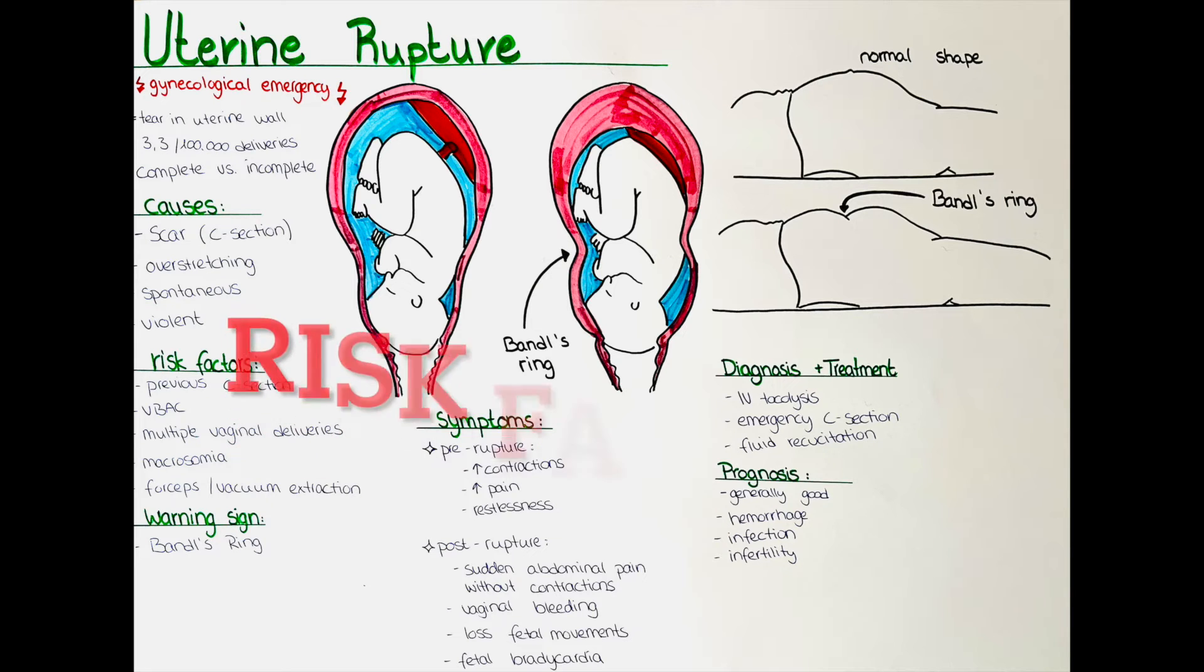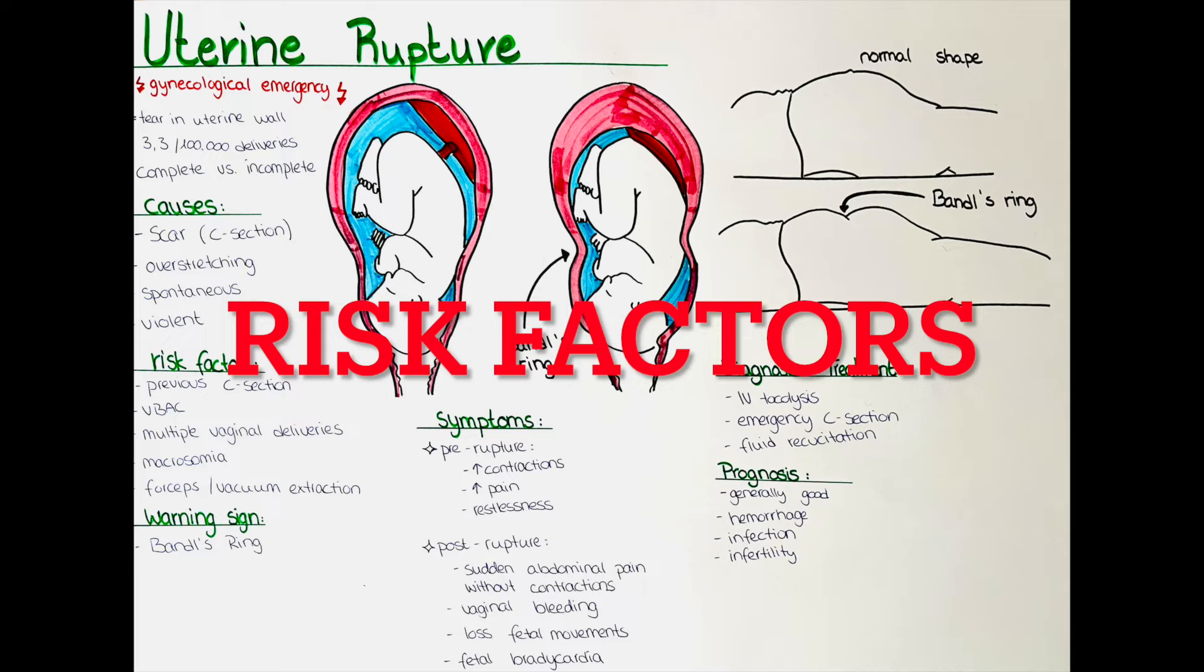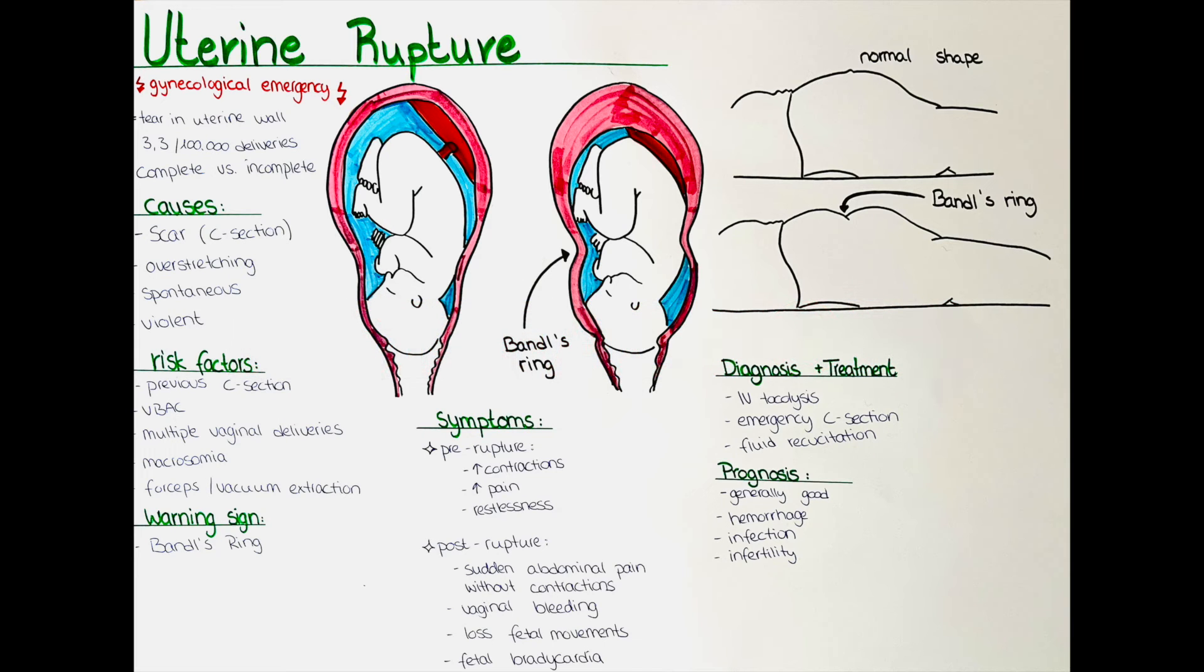What are risk factors for uterine rupture? Having a previous cesarean section increases the risk for a uterine rupture. As at the area of incision into the uterus, a scar forms and the scar tissue is less elastic than the uninjured tissue.